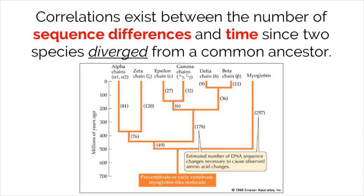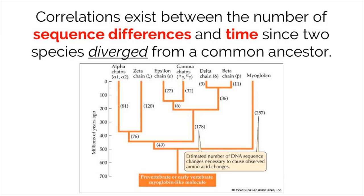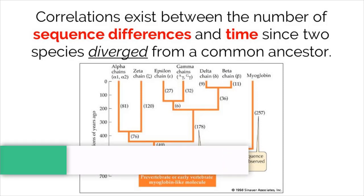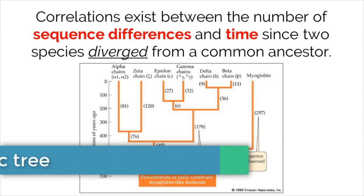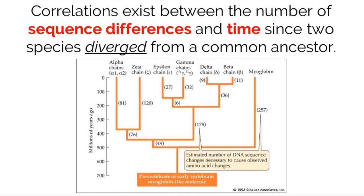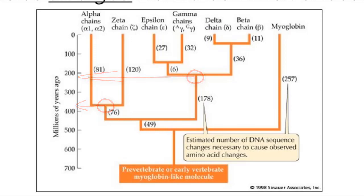Some versions of cladograms show the estimated amount of time the species diverged from a common ancestor. If time is shown, the diagram actually takes a new name called a phylogenetic tree. Scientists can use the correlation between sequence differences and time to construct phylogenetic trees. As you can see in this example, the split from this common ancestor for this clade occurred around 380 million years ago, while the split from this clade occurred around 220 million years ago. This becomes extremely helpful when trying to understand the evolutionary past of organisms on our planet.